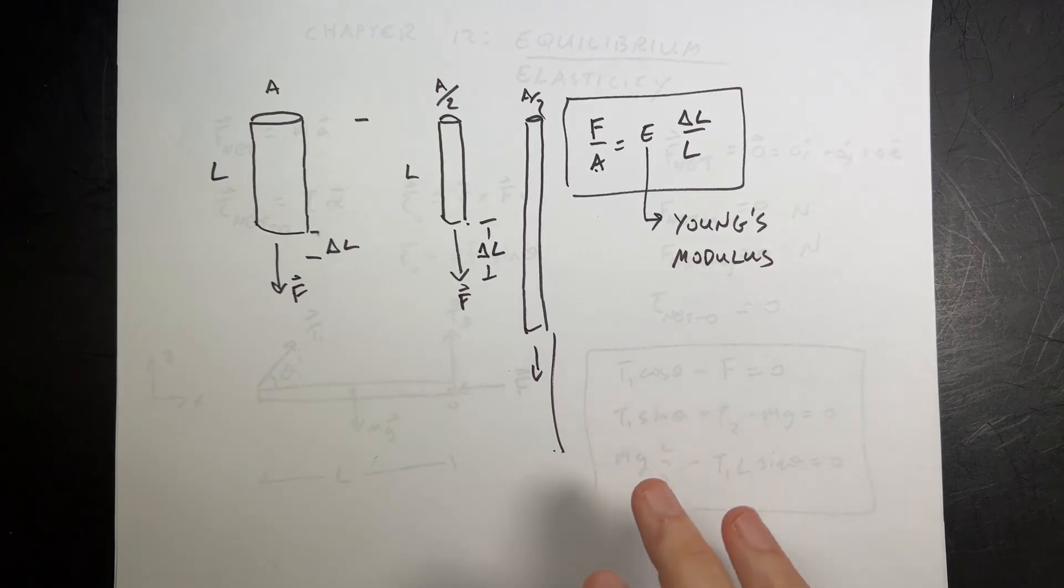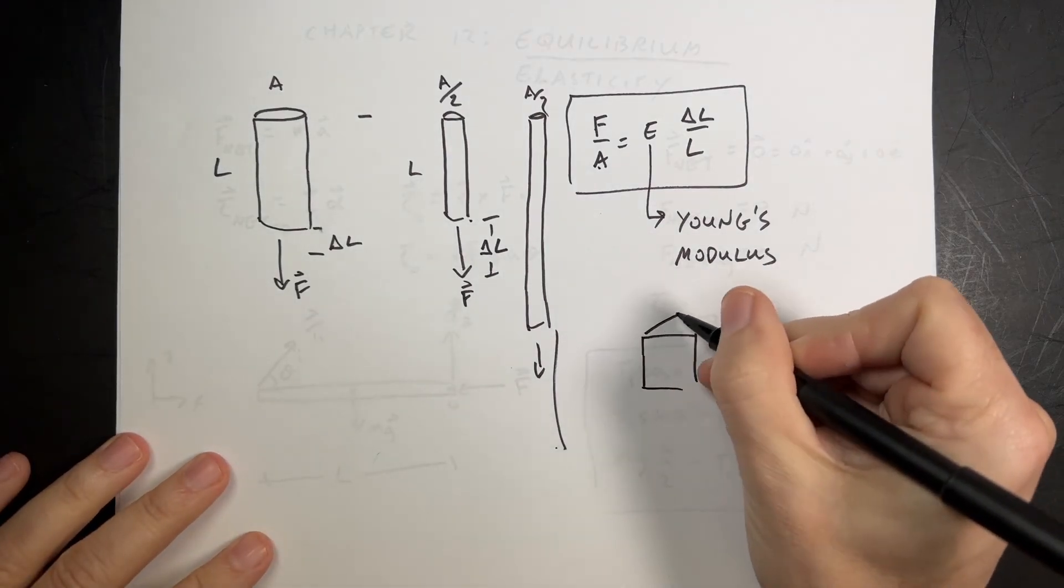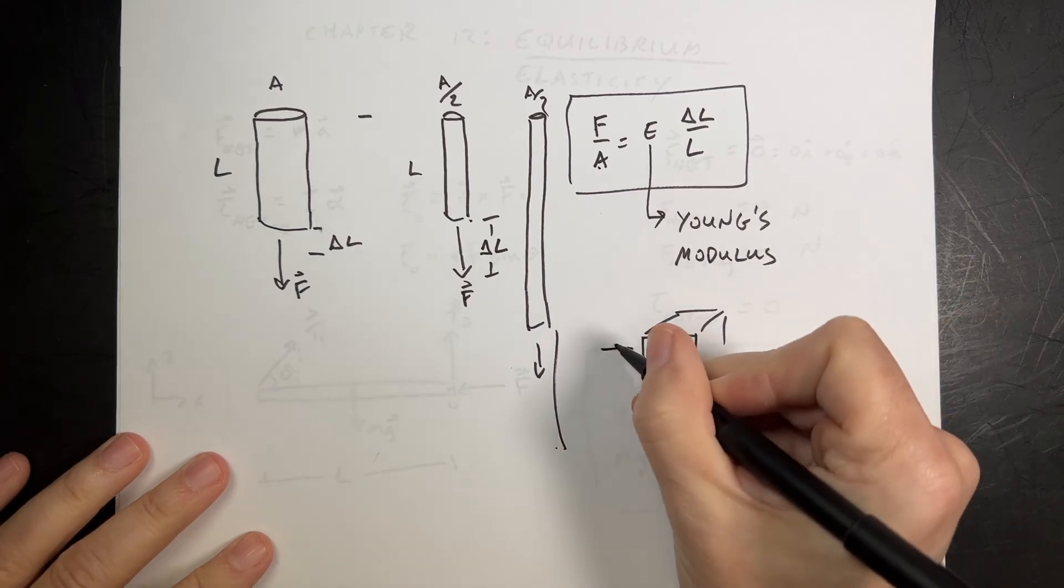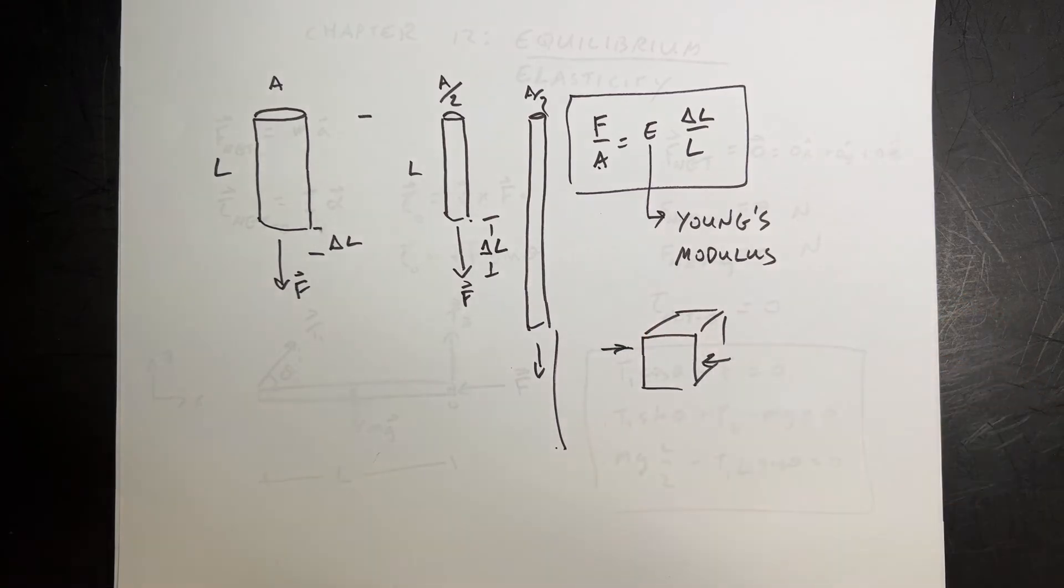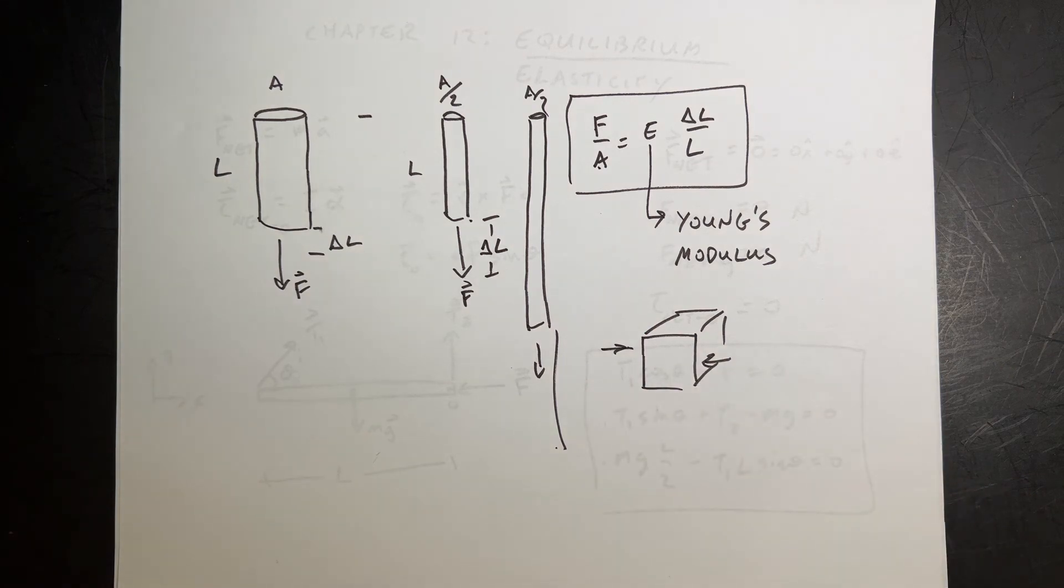They then go on to do a shear modulus. Shear modulus is when you take some object like this, and you push it. You squeeze it like scissors would do.